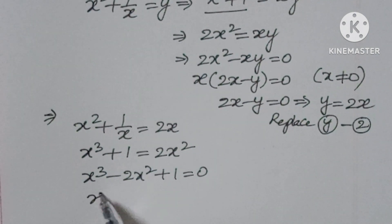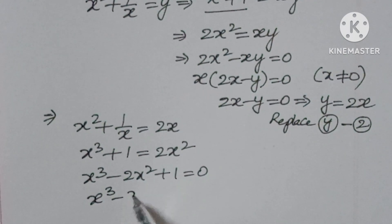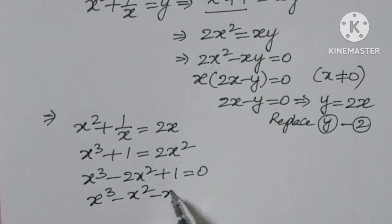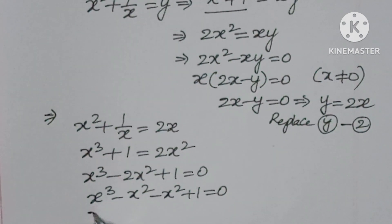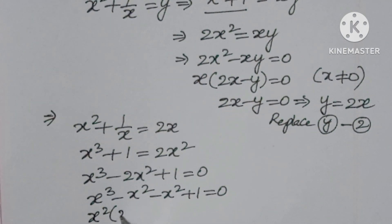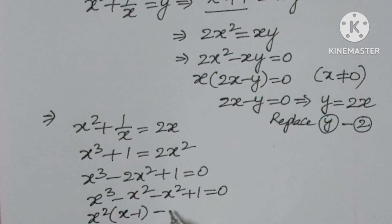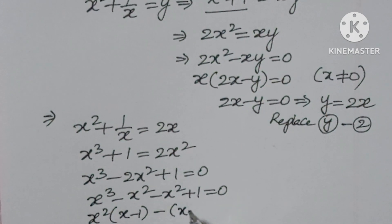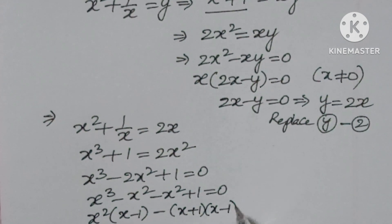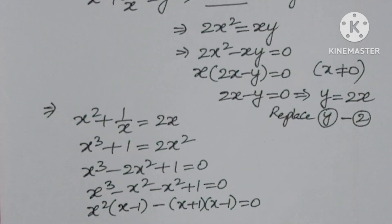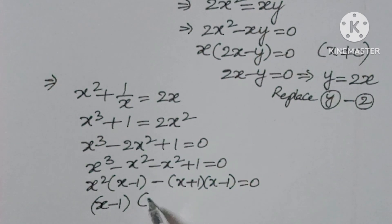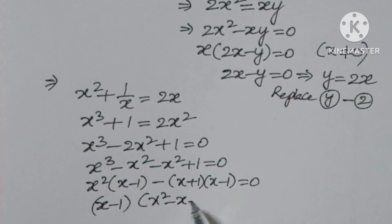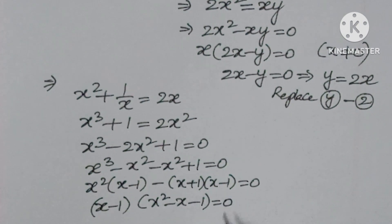Factoring: x cubed minus x squared minus x squared plus 1 equals 0. Taking x squared common: x squared times (x minus 1) minus (x plus 1)(x minus 1) equals 0. So x minus 1 is common, giving (x minus 1)(x squared minus x minus 1) equals 0.